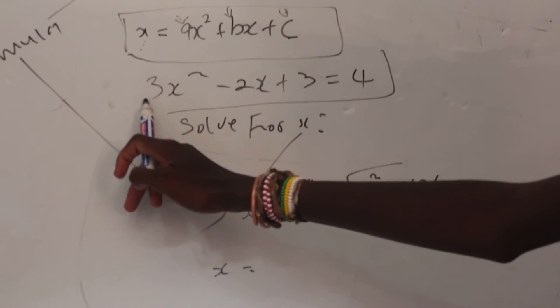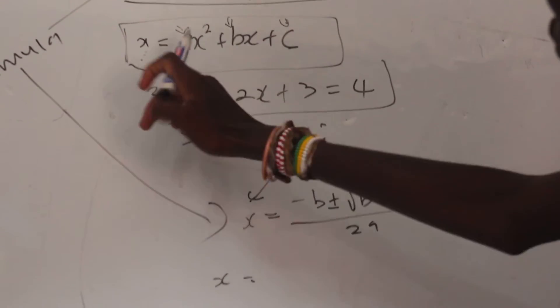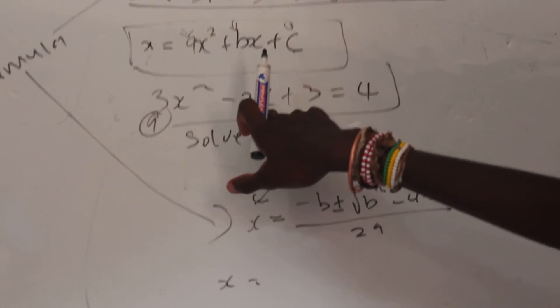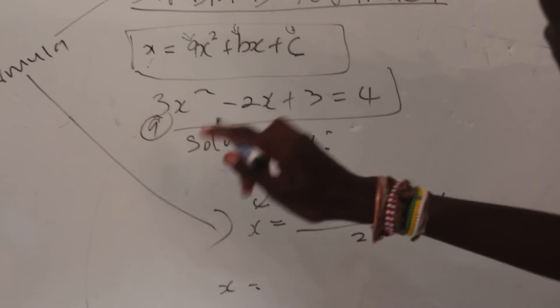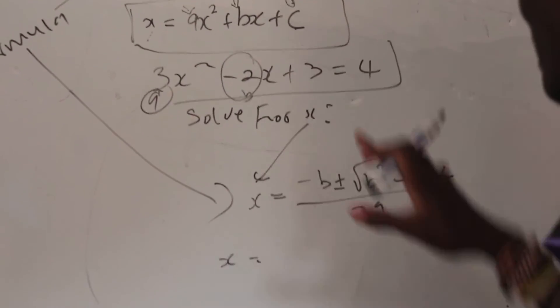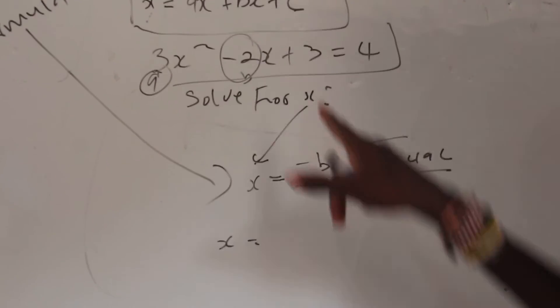Remember, standard formula says a is a number, b is a number, c is a number. We already know this is the coefficient of x squared, which means this is our a. We already know that this is the coefficient of x, which is also -2, which is our b.